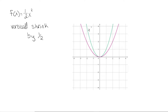Here I have the graph of x squared with the green line, and I'm going to multiply all of my y coordinates by one half. 1 times one half is one half, so the new y coordinate of those points is one half. 2 times one half is 1, so the new y coordinates of all of those points are 1. 3 times one half is one and a half, so those are the new y coordinates of these values. 4 times one half is 2, so that's the new y coordinate of these values. We're shrinking everything vertically by a factor of one half.